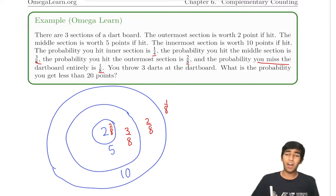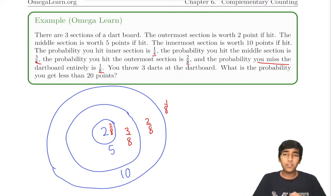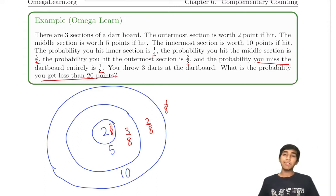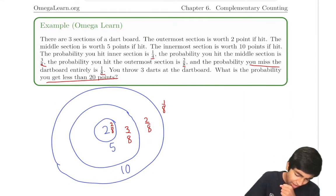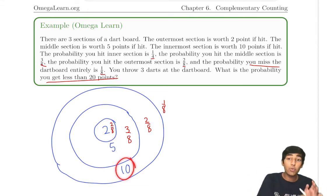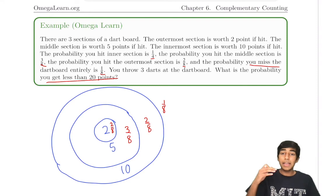Less than 20 — that seems like it's going to be a lot of cases: two-two-five, two-two-zero, five-five-zero, five-two-zero... there are just so many cases with a sum less than 20. We're going to use complementary counting to the rescue. Instead of finding the probability of getting less than 20 points, let's find the probability of getting 20 or more. To get 20 or more, we're going to have to be really close to the maximum of 30. So let's do casework based on how many tens we have.